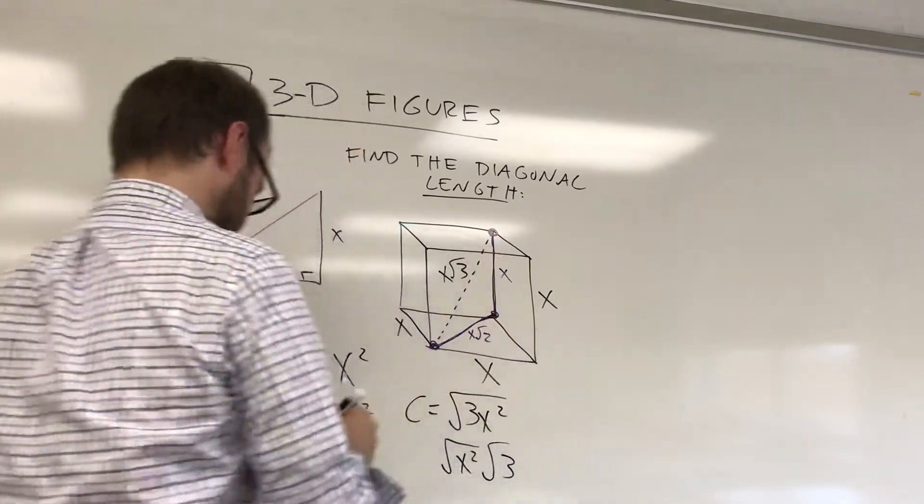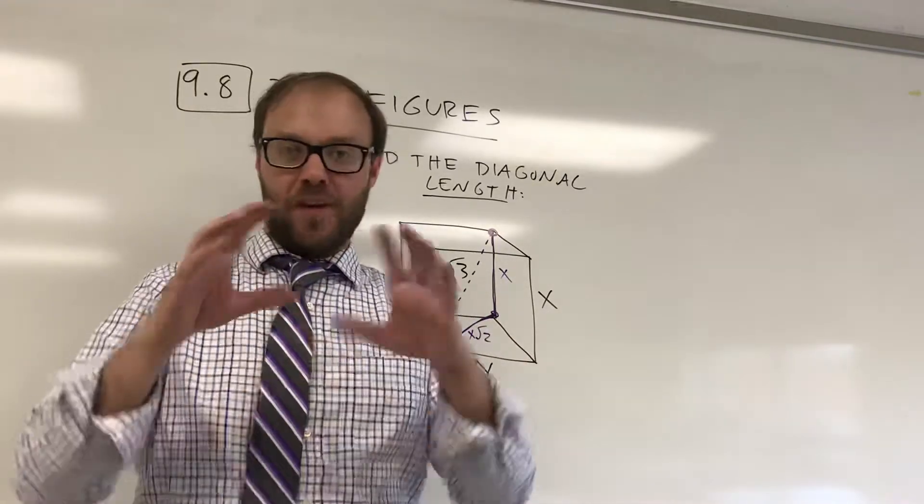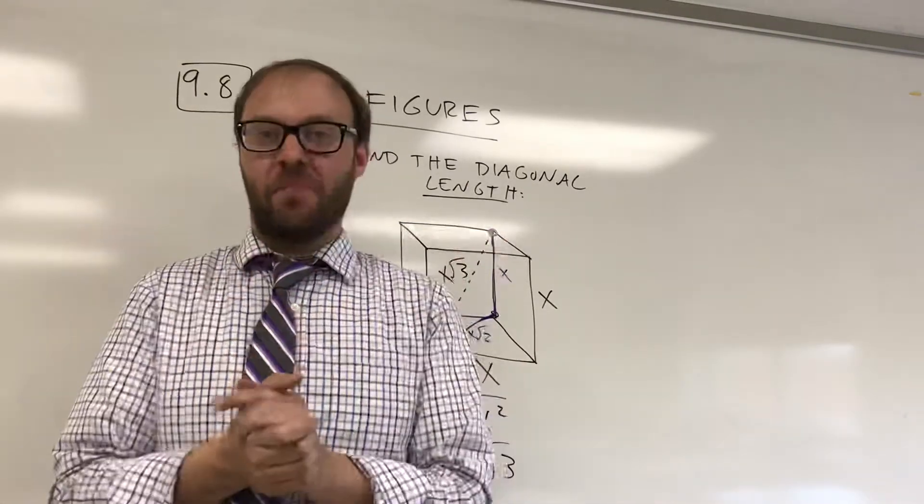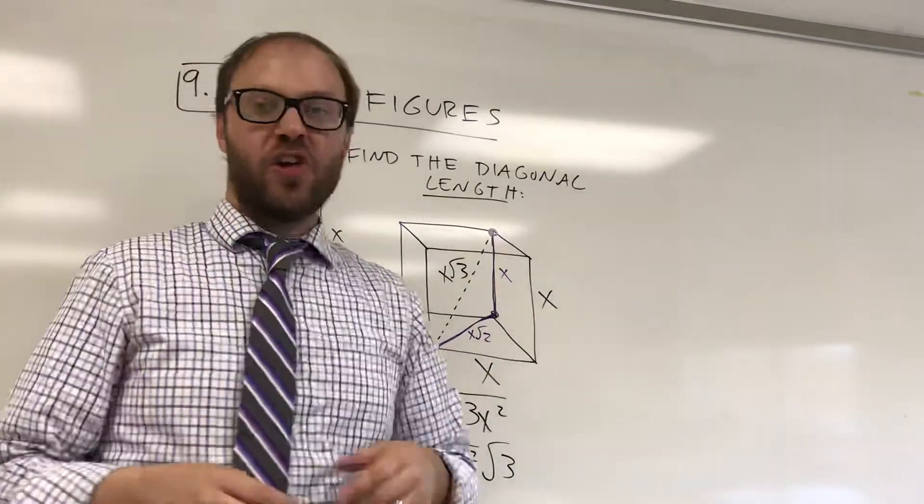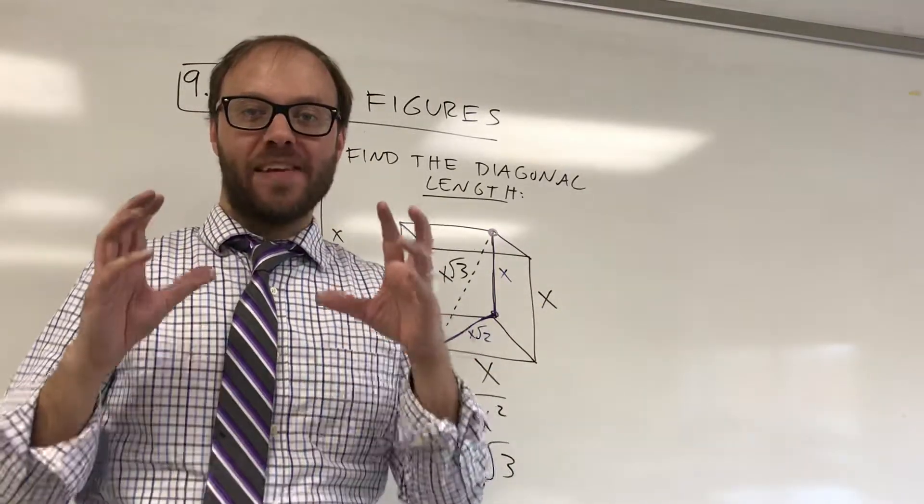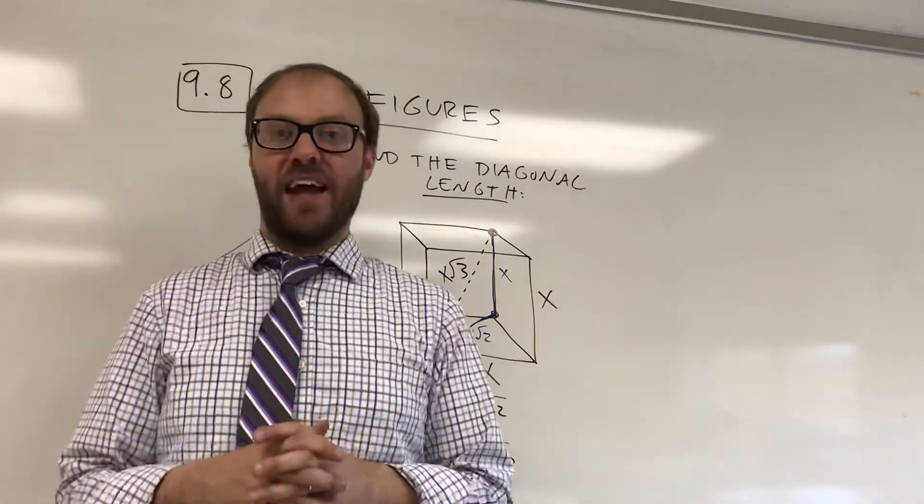So it tells us, any time you have three equal sides on a cube, three equal dimensions which makes it a cube, it's an x by x by x, you can always multiply the side lengths of a cube by radical 3 to get the length of the diagonal.